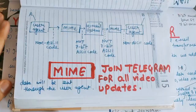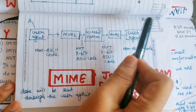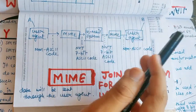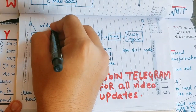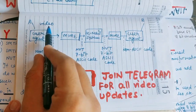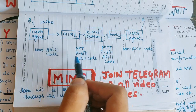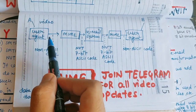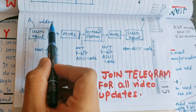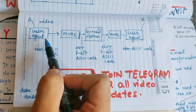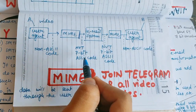Let us see a diagram. Suppose there is a User A and a User B. A wants to send an email to B — specifically, A wants to send a video file. A video file is not in NVT 7-bit ASCII code, which is the standard format the email system requires. So A will send his data — that video — with the help of his user agent.